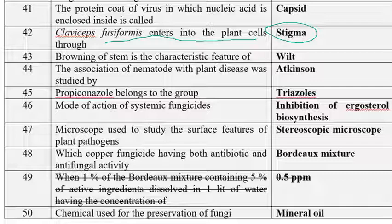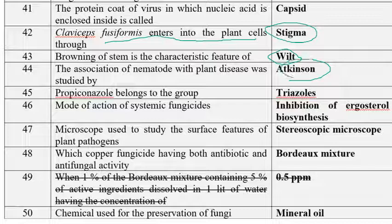Browning of stem is the characteristic feature of wilt. If you cut open the stem, you can see browning discoloration, especially vascular discoloration. The association of nematodes with plant disease was first studied by Atkinson in 1891 in cotton.